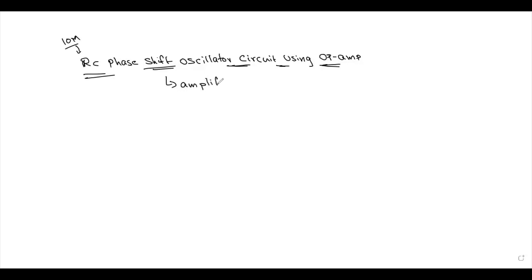What is the use of amplifiers? Amplifiers are used to increase the strength of signals. So in the RC phase shift oscillator, we use an amplifying circuit for this purpose.